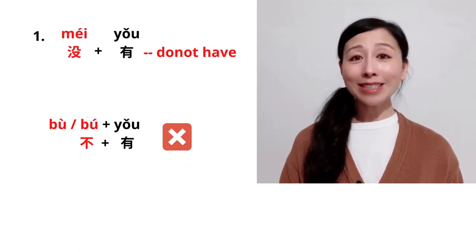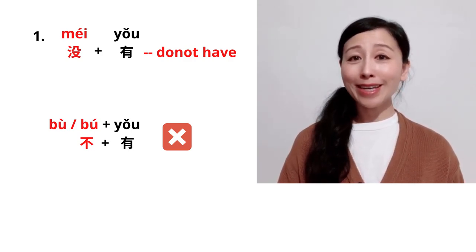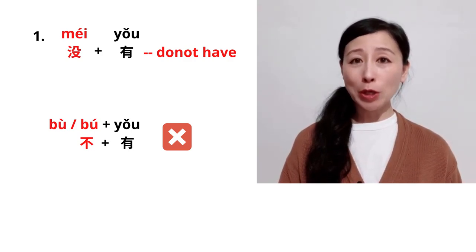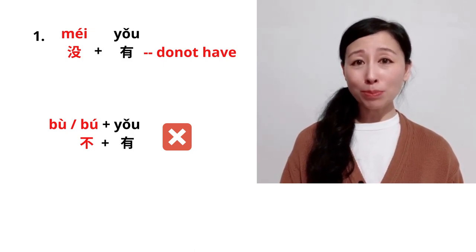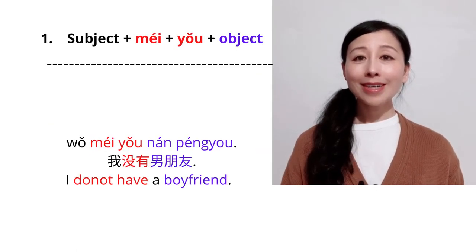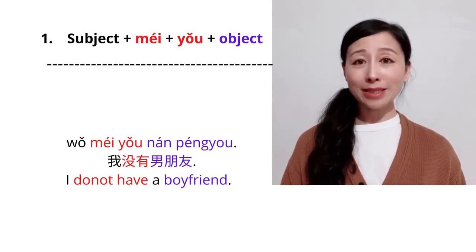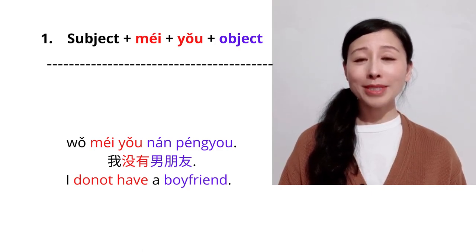Okay, now let's talk about mei. The first usage of mei is used to negate verb yǒu, means don't have. You cannot use bu to negate yǒu. Bù yǒu, and that is wrong. The structure is subject plus mei plus yǒu plus object.